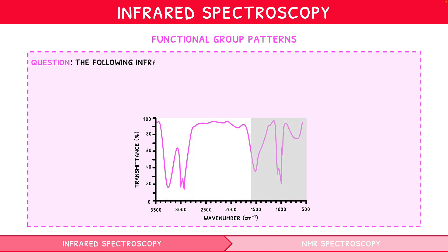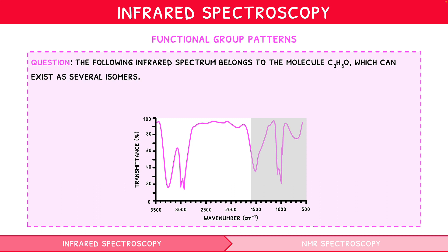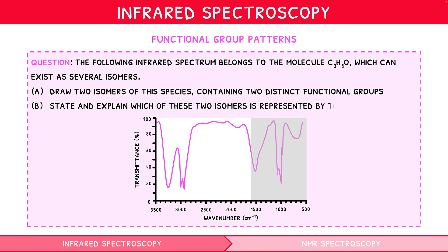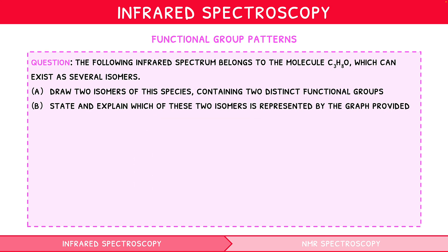The following infrared spectrum belongs to the molecule C₃H₈O, which can exist as several isomers. Part A: draw two isomers of this species containing two distinct functional groups. Part B: state and explain which of these two isomers is represented by the graph provided. For A, we can see this species is a three-carbon chain which must contain a single oxygen atom, allowing for the creation of an alcohol, aldehyde, ether, or ketone.